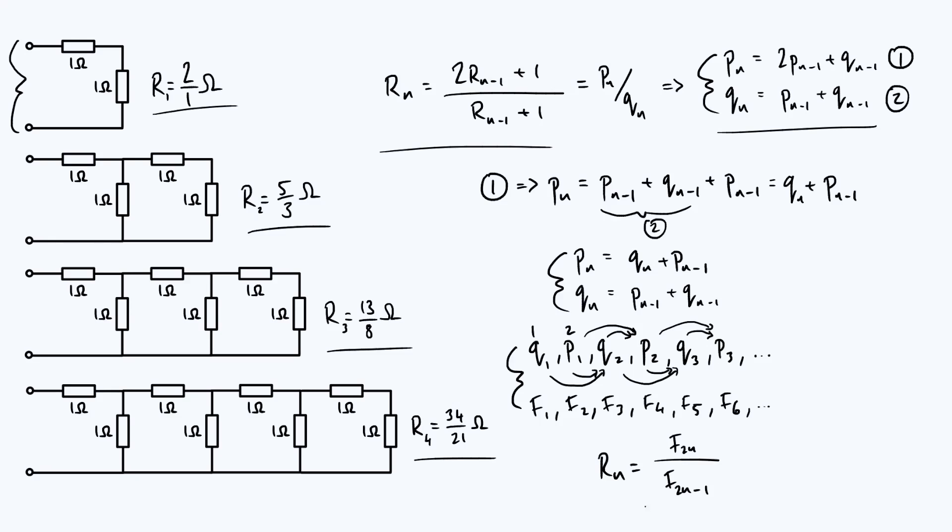Another property of Rn that follows quite quickly from our result here is that as n goes towards infinity, Rn tends towards the golden ratio. In other words, if we make an infinite ladder of resistors, we get an effective resistance of the golden ratio because it's just a known property of the Fibonacci sequence that the ratio of successive terms tends towards the golden ratio as n gets large. All right, I think that concludes this video. Thanks for watching and see you next time.